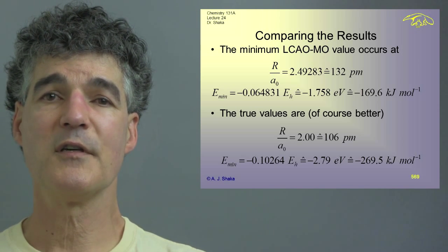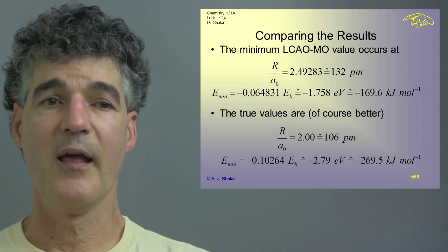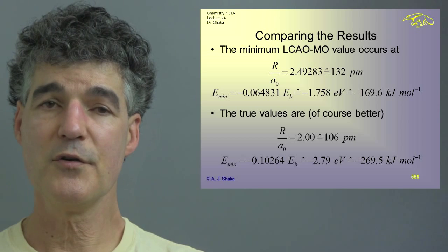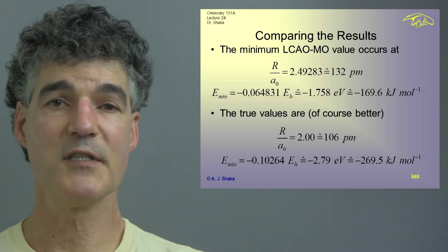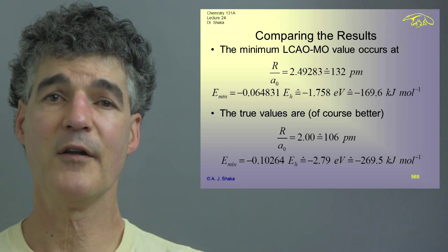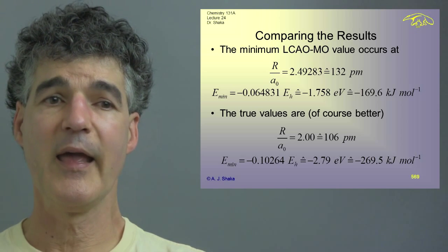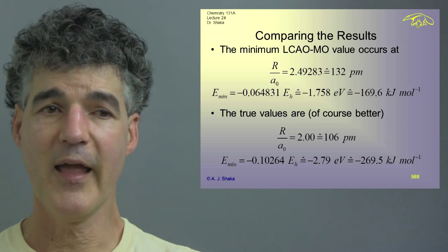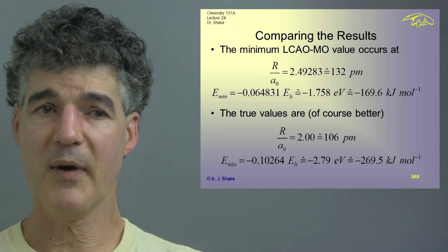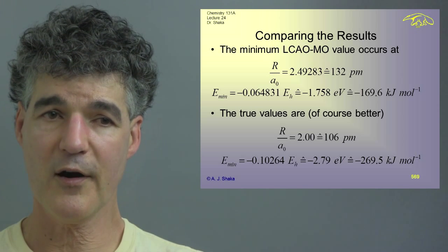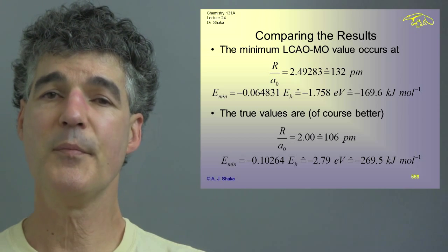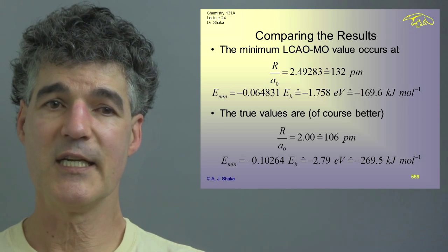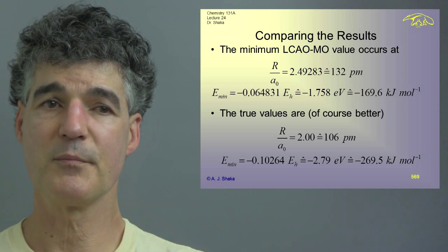The true values are better. The true value of big R is just 2 a-naught, which is about 106 picometers instead of 132. The true energy is minus 0.10264 Hartree, minus 2.79 electron volts, or minus 269.5 kilojoules per mole.